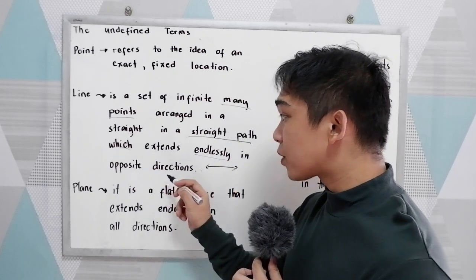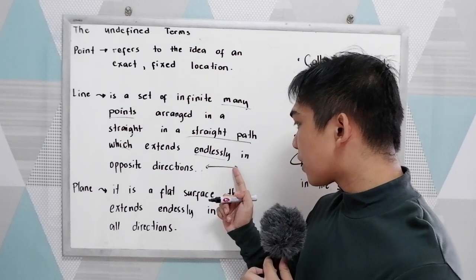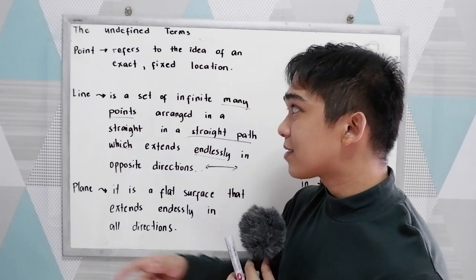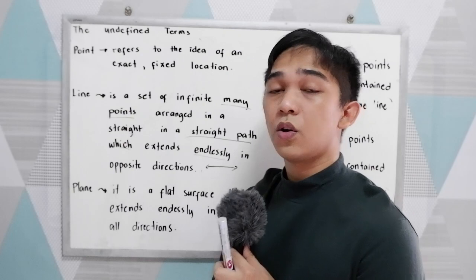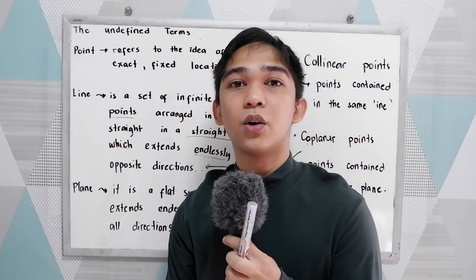Endlessly in opposite directions. So the line is continuous up to infinity. Example of line is the edge of this whiteboard or the edge of your book.